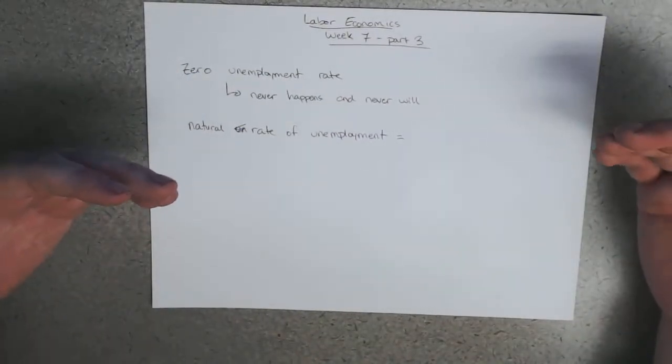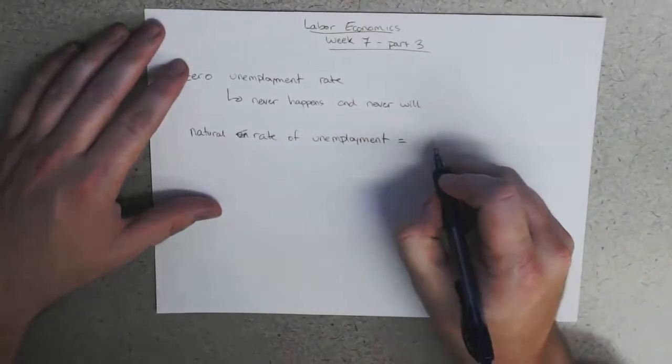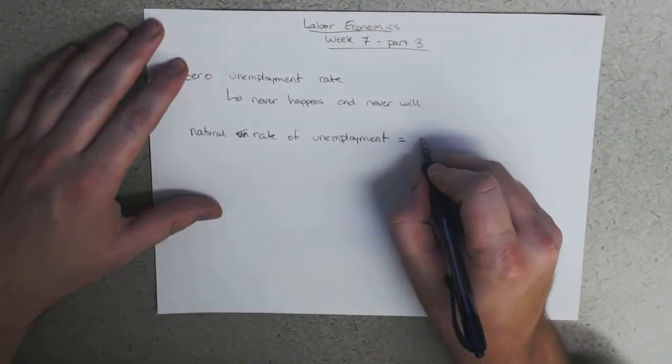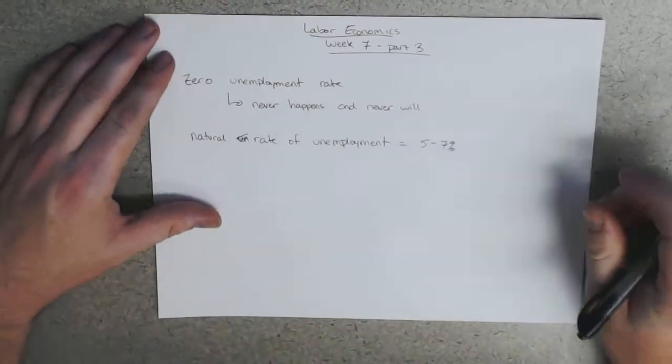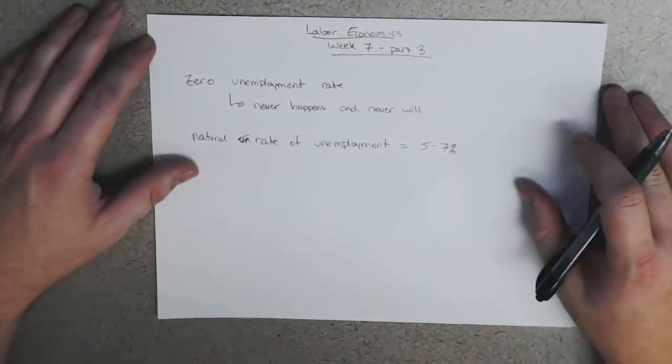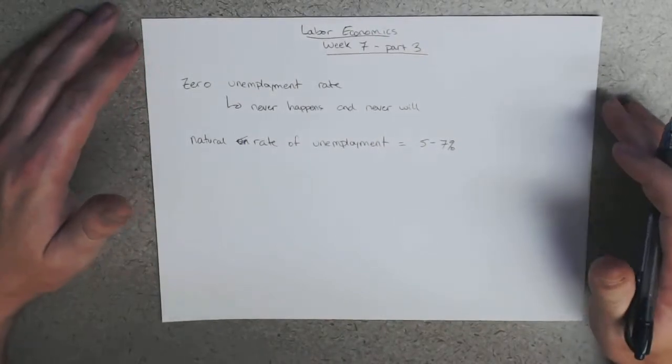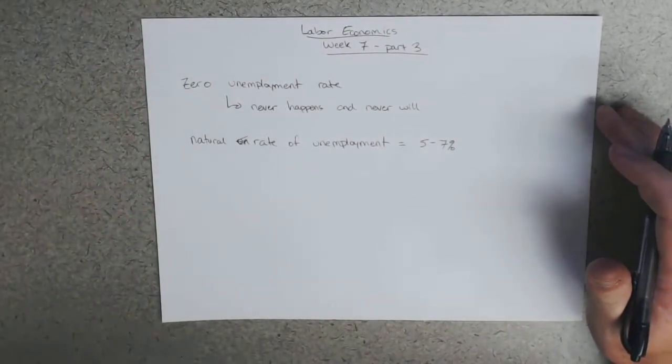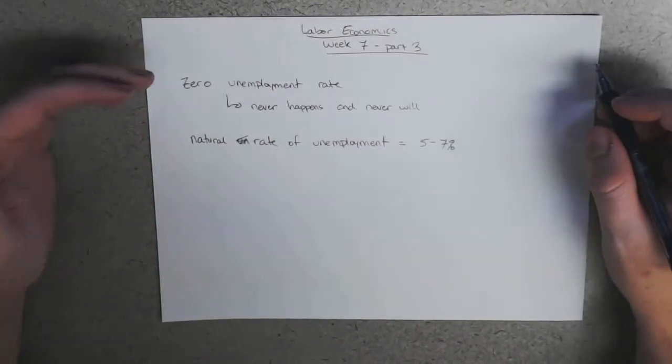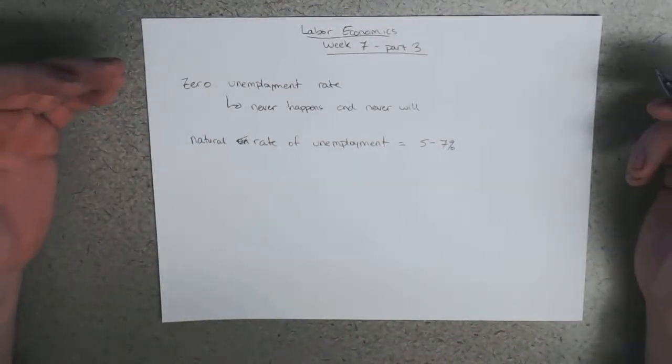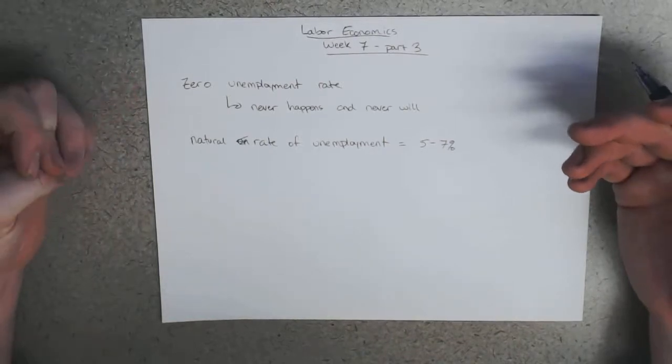This textbook says that the natural rate of unemployment is somewhere between five and seven percent. Other textbooks will say it's somewhere between four and six. I've seen some go as low as three to seven. So it's largely a guess.